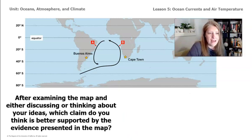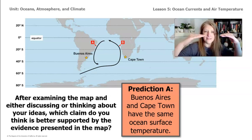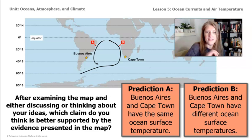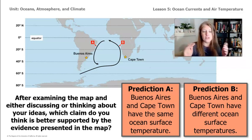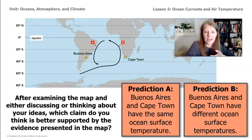After examining the map, choose one of these two claims. Do you think Buenos Aires and Cape Town would have the same ocean surface temperature — remembering they're at the same latitude and receive the same amount of solar energy? Or do you predict they have different ocean surface temperatures, given that their currents originate from different places — one from the equator and one from the pole? Pause the video, think it through, discuss with a partner, and be ready to share your thoughts.